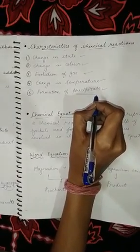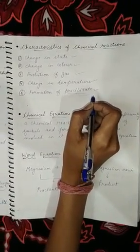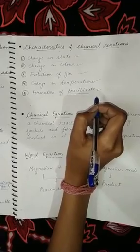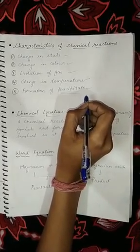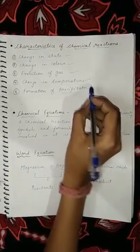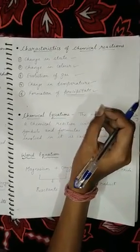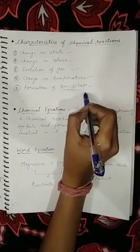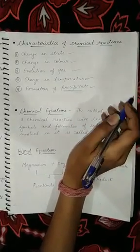Fifth is formation of precipitate. In the activity with potassium iodide solution and lead nitrate, a yellow precipitate of lead iodide was formed. A precipitate is a solid product which separates out from the solution during a chemical reaction.